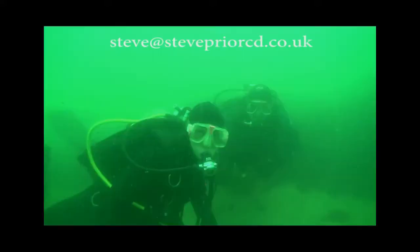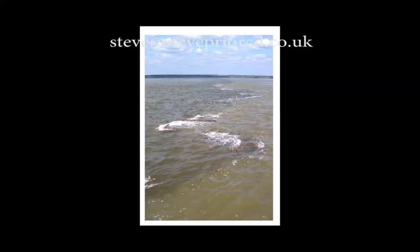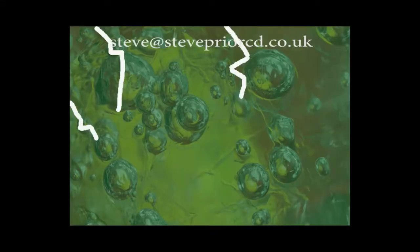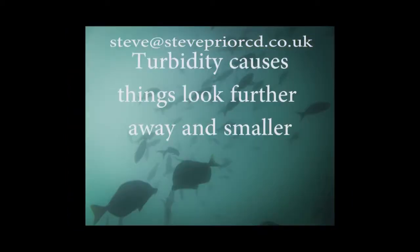However, when the water is particularly murky or turbid, then exactly the opposite of this can happen. This is simply when turbidity or low visibility can confuse the light waves and cause things to look further away and smaller. Not surprisingly, this is called visual reversal.